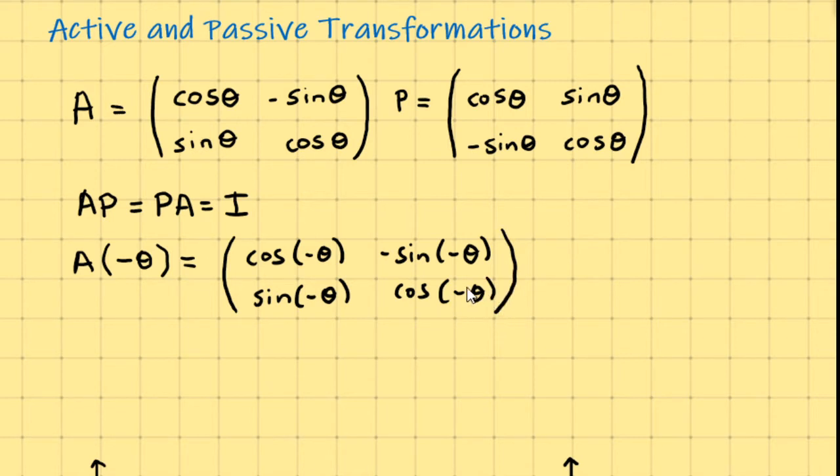Because cosine of minus theta is the same thing as cosine of theta. Which, if you know your trigonometric identities, works out to be cosine theta.